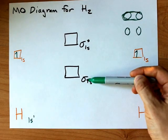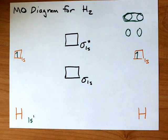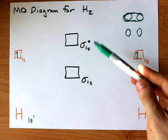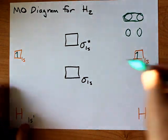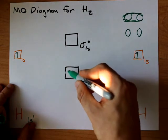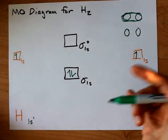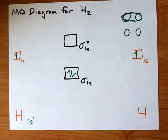We have a bonding and antibonding molecular orbital and we have to fill it from bottom up according to the Aufbau principle. We have two electrons total in the molecule, one from each H. One, two, and I'm done. This is a molecular orbital diagram for hydrogen.